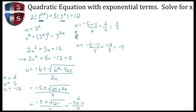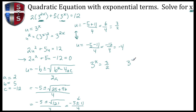Both solutions are in terms of u, but we want it in terms of X. So we make another substitution going back to X. Since u is the same as 3 raised to the X, our first equation is 3 raised to the X equals 3 halves, and the second equation is 3 raised to the X equals negative 4.